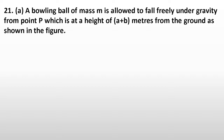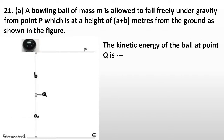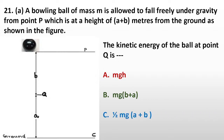Question twenty-one A. A bowling ball of mass M is allowed to fall freely under gravity from point B which is at a height of (A + B) meters from the ground. The kinetic energy of the ball at point Q is dash. Options: A, MGH; B, Mg(B + A); C, half Mg(A + B); D, half MGH. The correct answer is A: MGH.